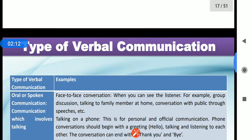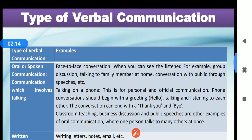The types of verbal communication include oral or spoken communication — communication which involves talking face-to-face, when you can see the listener. For example, group discussion, talking to family members. These are called oral or spoken communications.